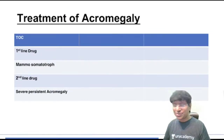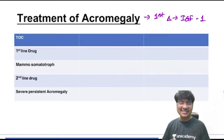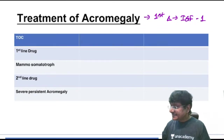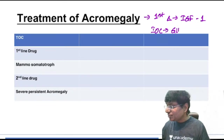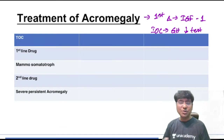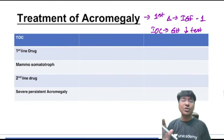First line investigation is somatomedin (IGF-1) levels, which are elevated. Investigation of choice is the growth hormone suppression test: give 100 grams of glucose load — normally growth hormone should reduce, but in acromegaly suppression does not occur.